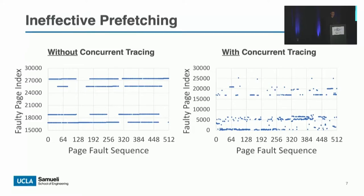The second problem is ineffective prefetching. GC performs graph traversal which has barely any temporal or spatial locality. When running application and GC tracing concurrently, even if the application's memory accesses follow a simple sequential pattern, the combined accesses from both the application and the tracing often appear random from the OS perspective. So almost all prefetchers in the kernel cannot recognize clear memory access patterns and hence give up prefetching.